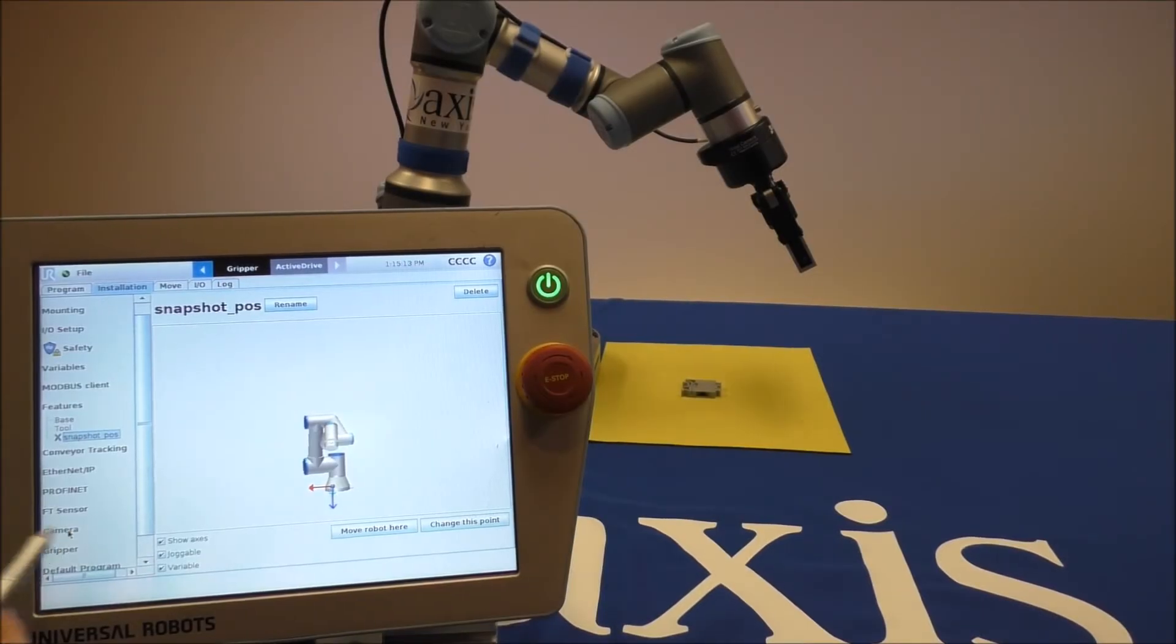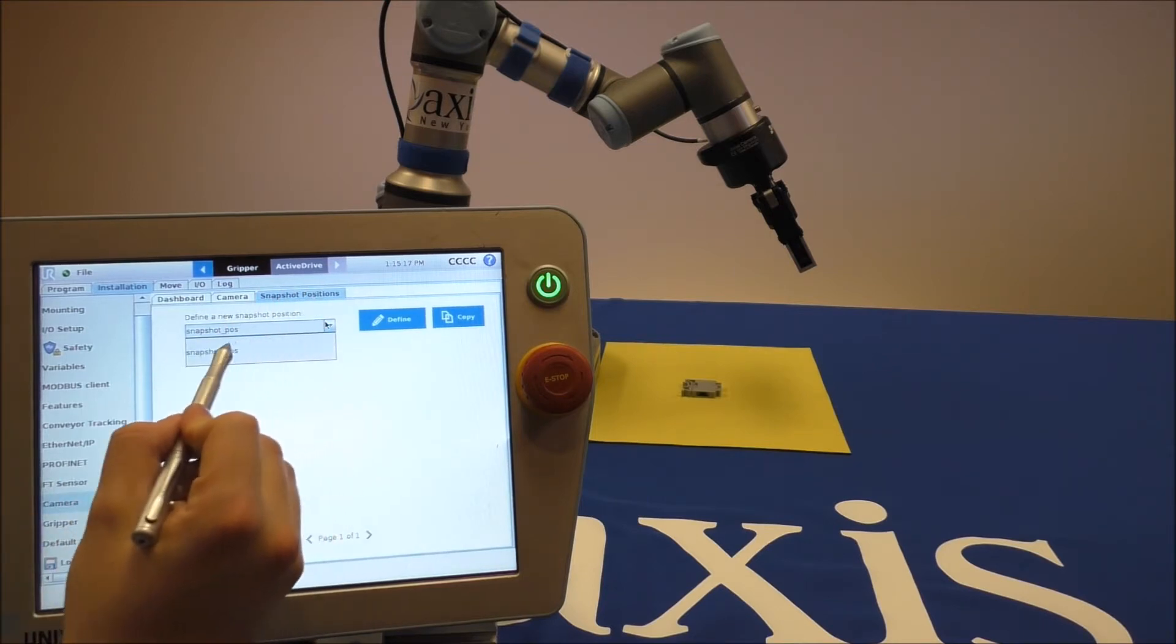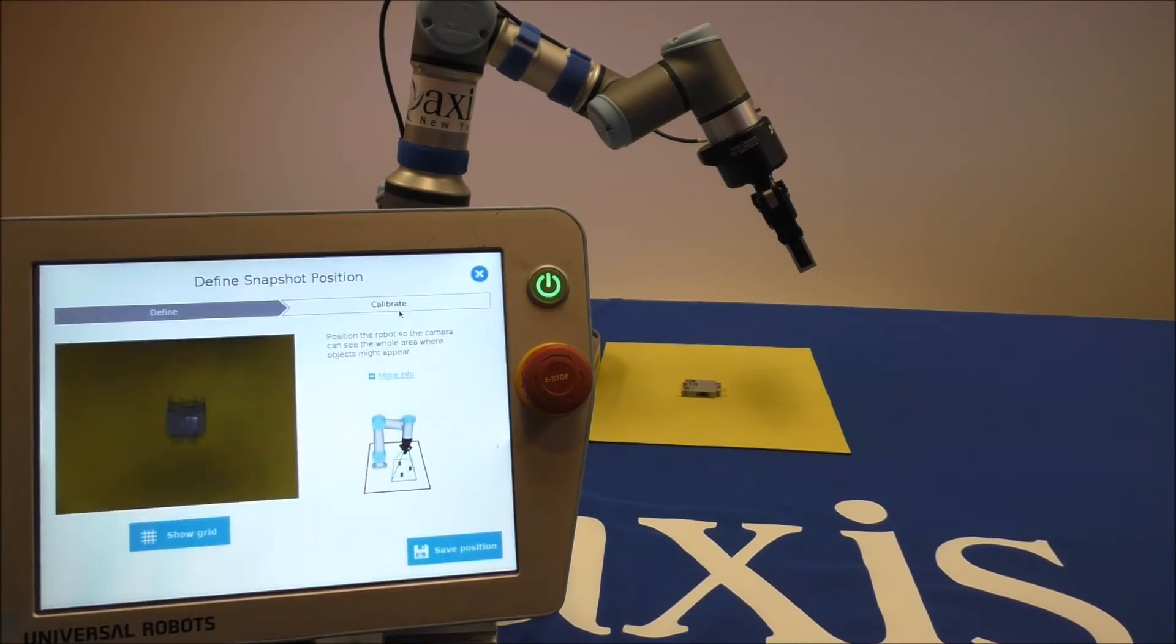Now that we've created our point, we can go to the camera tab and go to snapshot positions. Select the point we just made and press define. This opens a Roboteek wizard which will guide us through the calibration process.